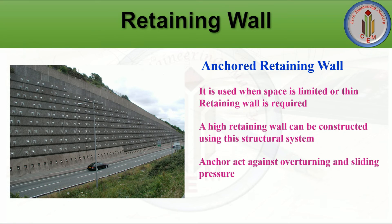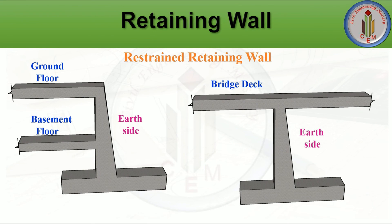Anchored retaining walls are used when space is limited or a thin retaining wall is required. Anchors act against overturning and sliding pressure, allowing high retaining walls to be constructed. This system can be used for loose soil over rocks. Deep cable rods or wires are driven sideways deep into the earth and then filled with concrete to provide the anchor.